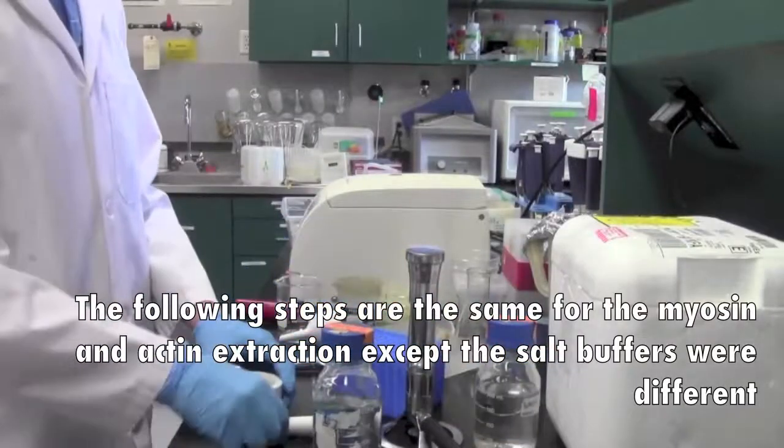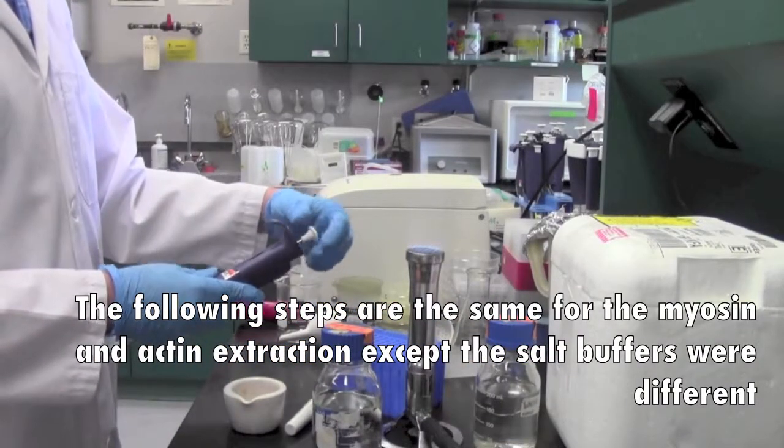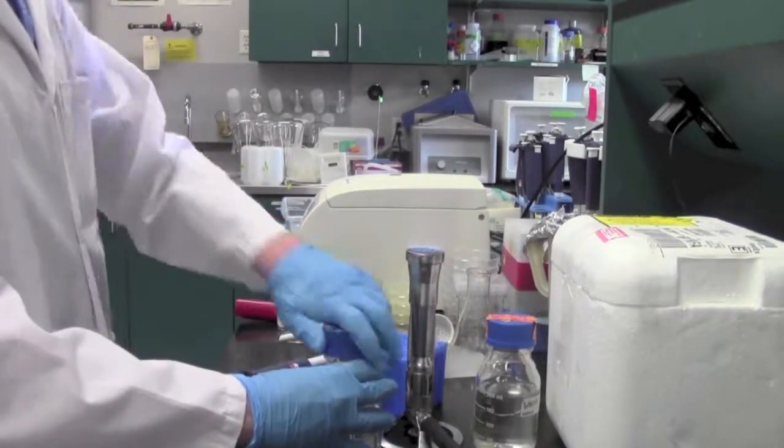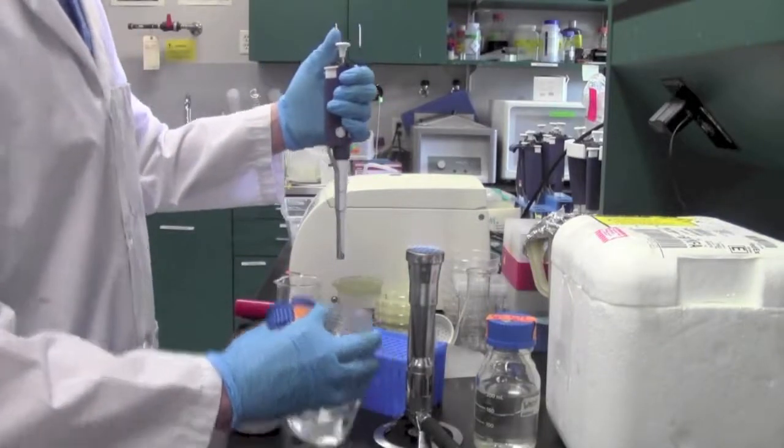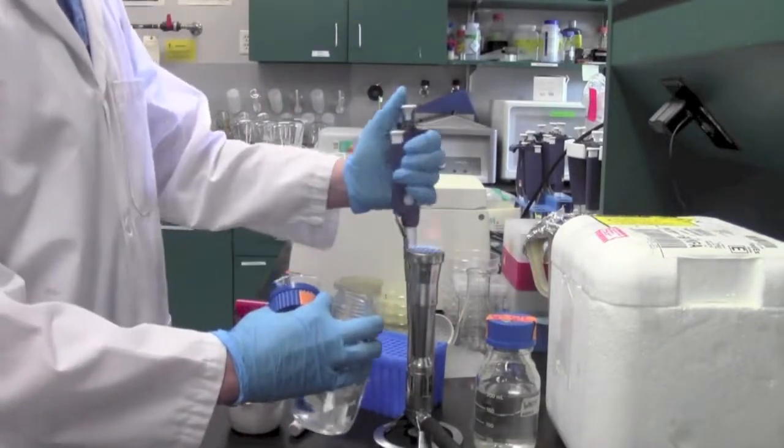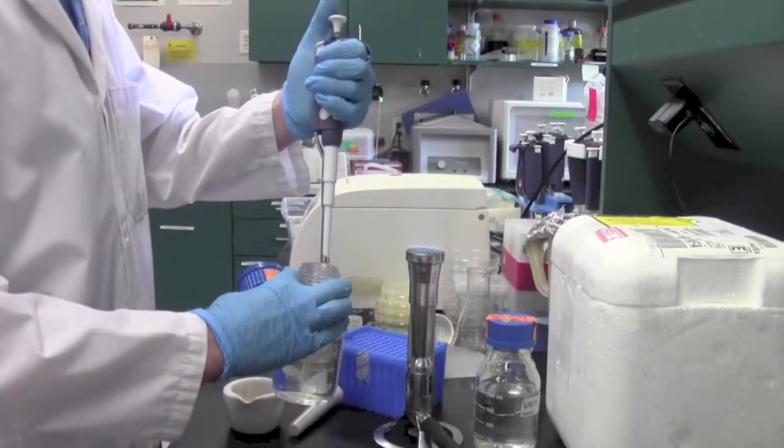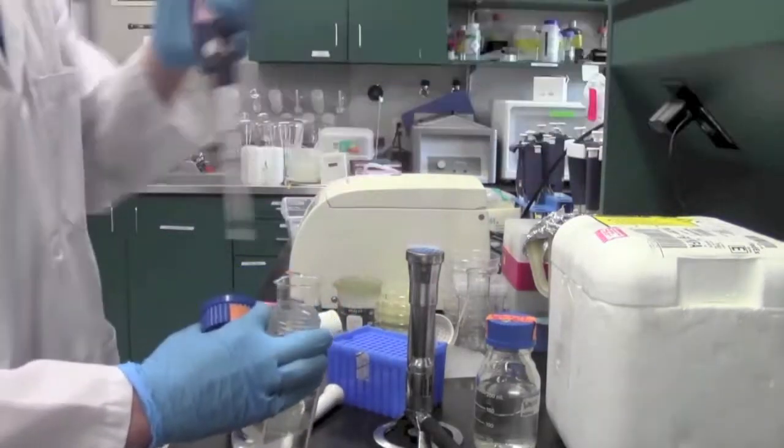So for the following steps, these were the same for the myosin and actin extraction except the salt buffers were different. Here I am adding the initial five milliliters of buffer to proceed with the grinding using a pestle and mortar.